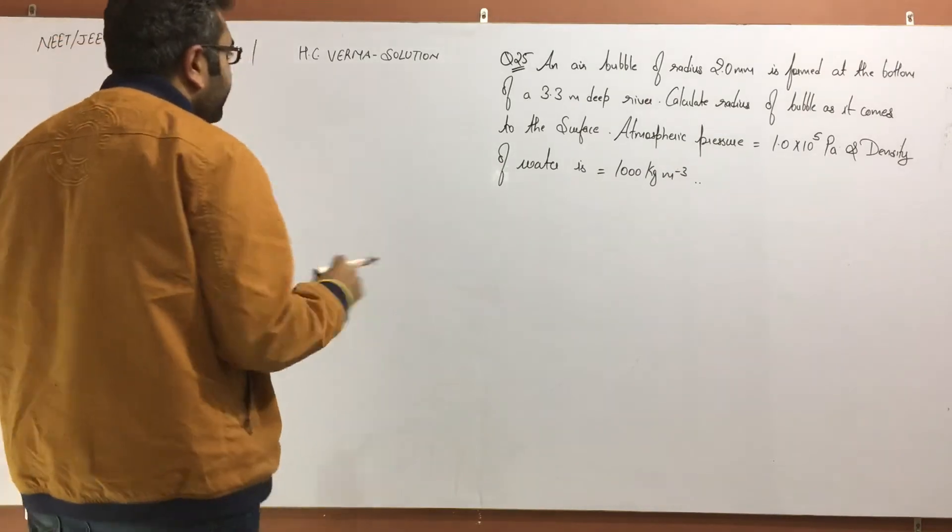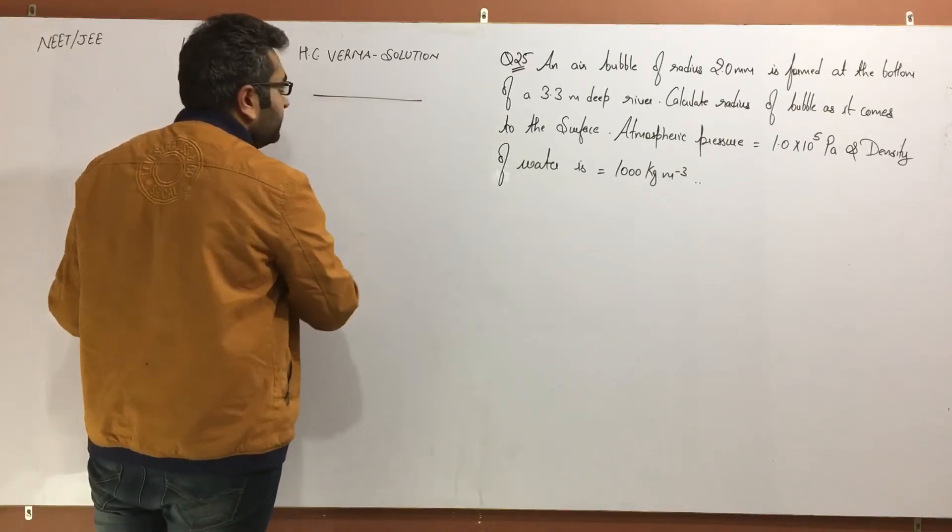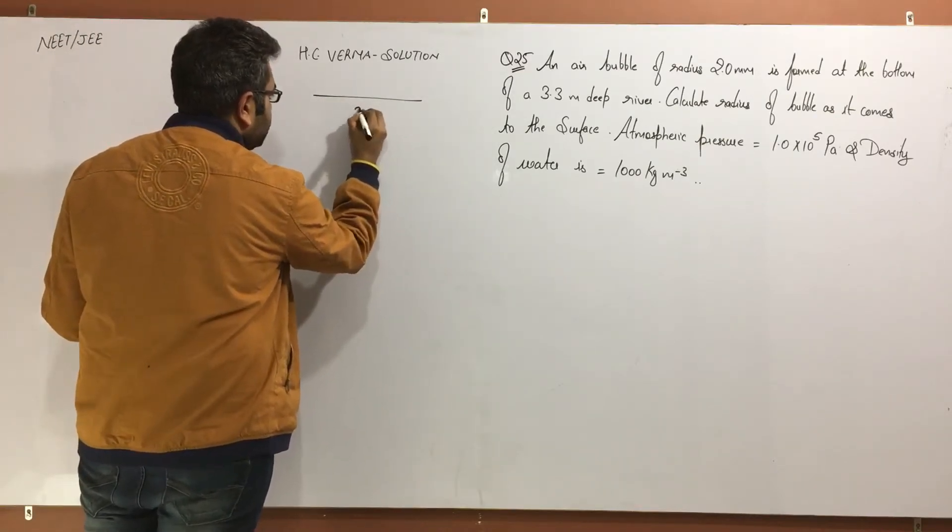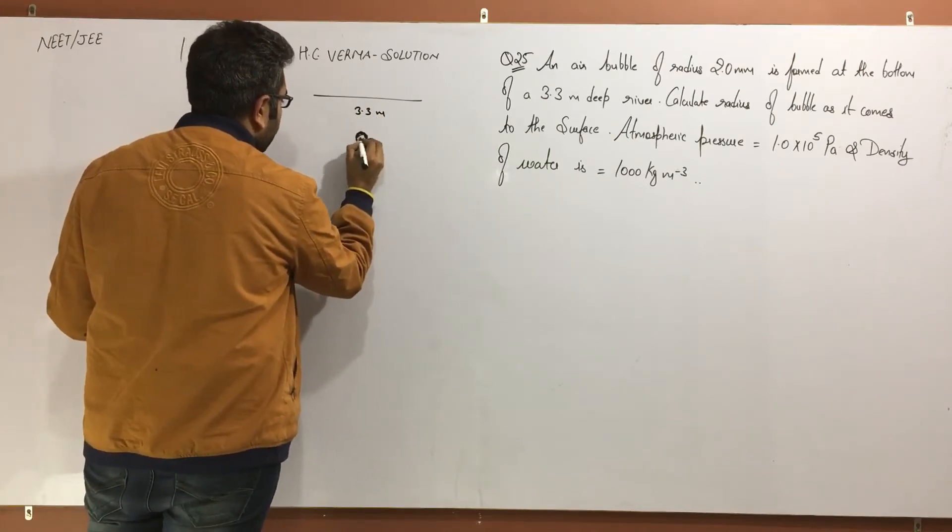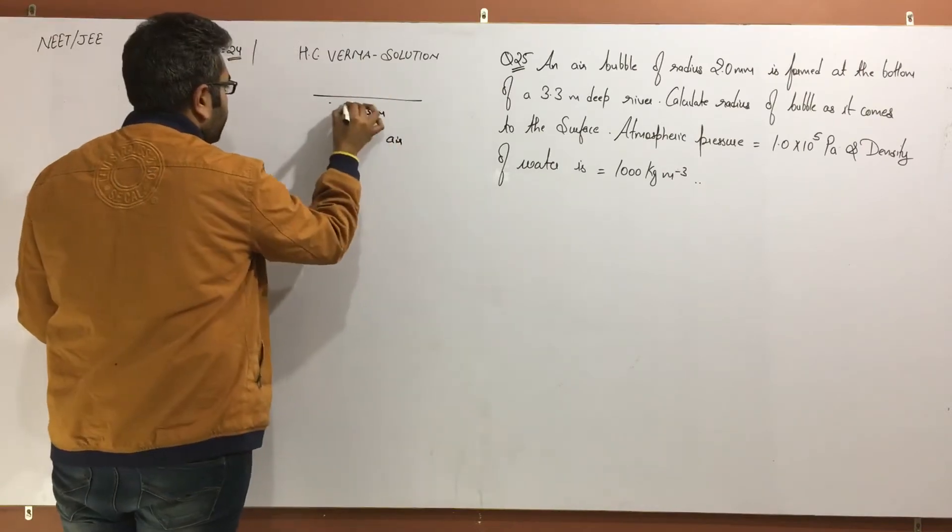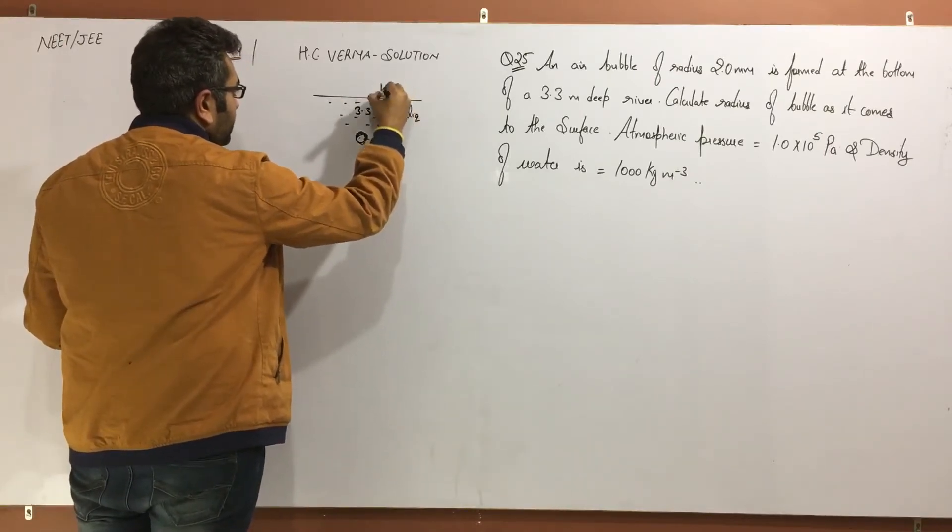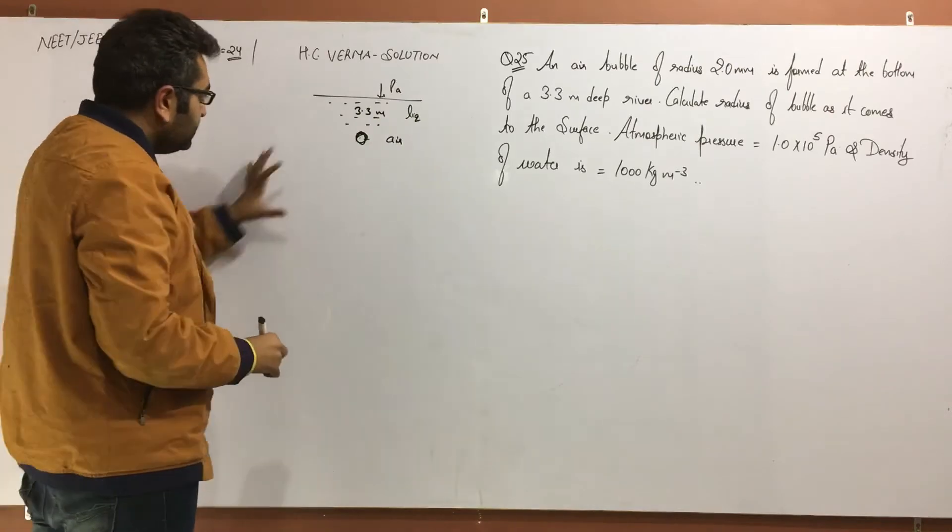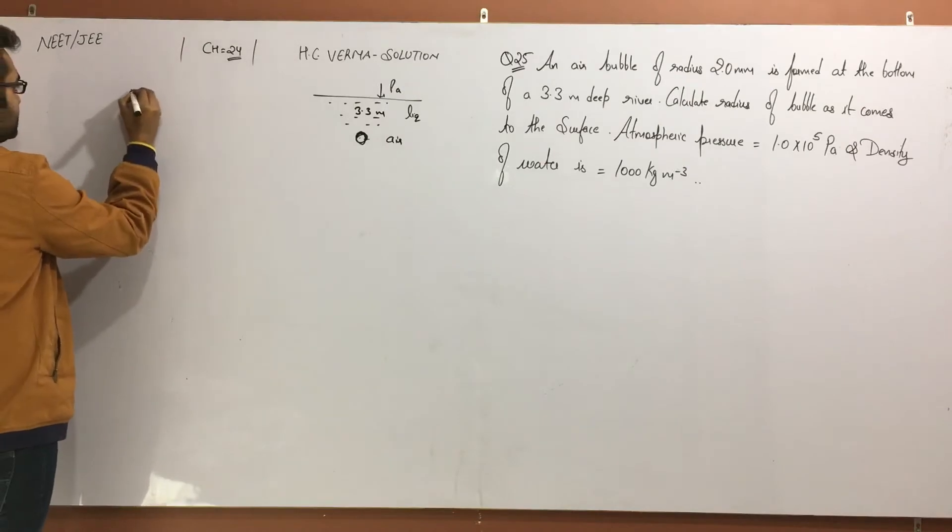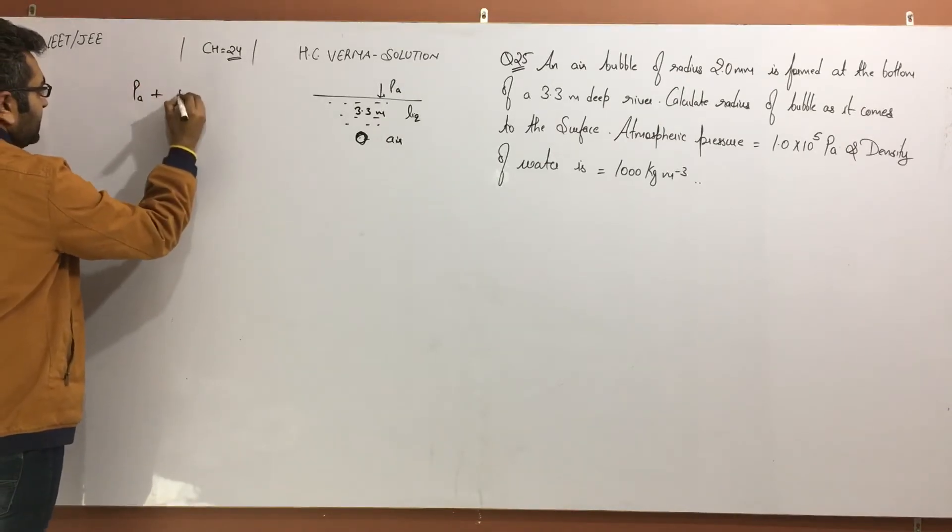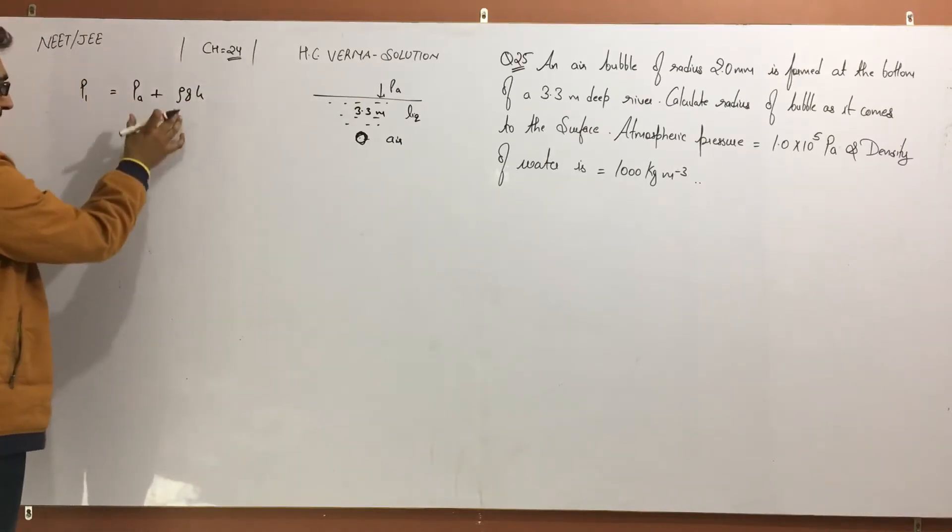Hello guys, I am Indrajit. So we are talking about question number 25. In this question there is a situation given that a river 3.3 meter deep, a bubble has sustained at the bottom which is an air bubble. So what is the pressure on it? Liquid pressure plus atmospheric pressure.